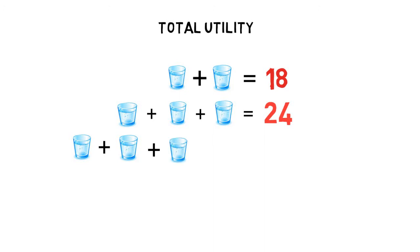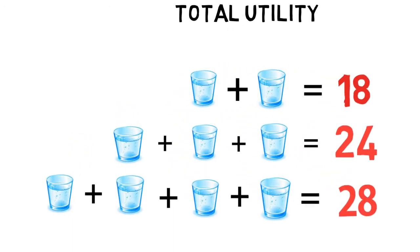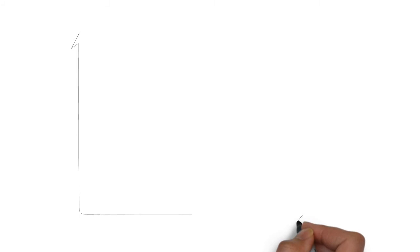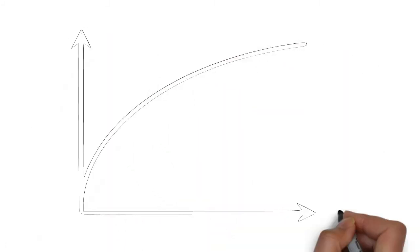Total utility when Den consumes four glasses of water is 28, which is 10 plus 8 plus 6 plus 4. Please note, the total utility is increasing but at a decreasing rate.